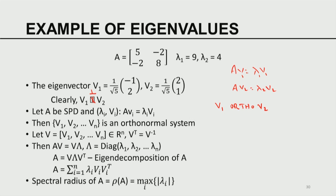I strongly encourage the reader to verify these computations. Now I am going to generalize this. Let A be a symmetric positive matrix. Let (lambda_i, v_i) be such that Av_i equals lambda_i v_i for each i running from 1 to n — there are n such equations. We have a collection of eigenvectors; without loss of generality, eigenvectors are going to be normalized.